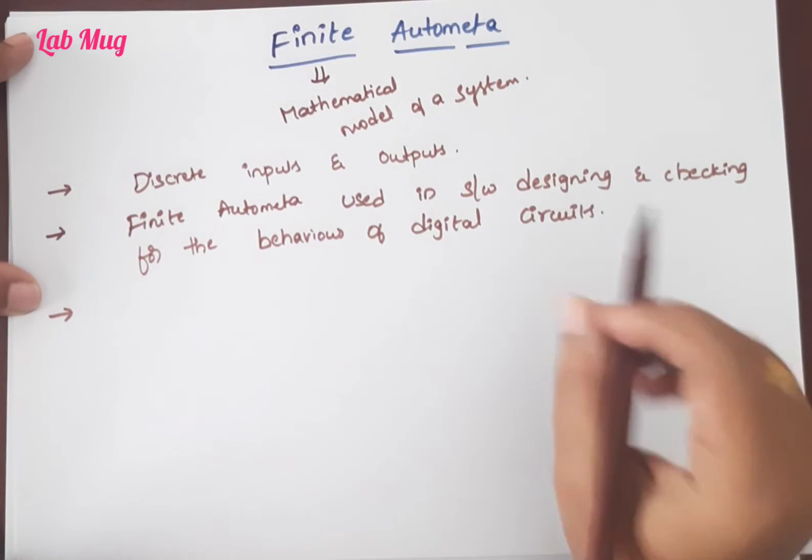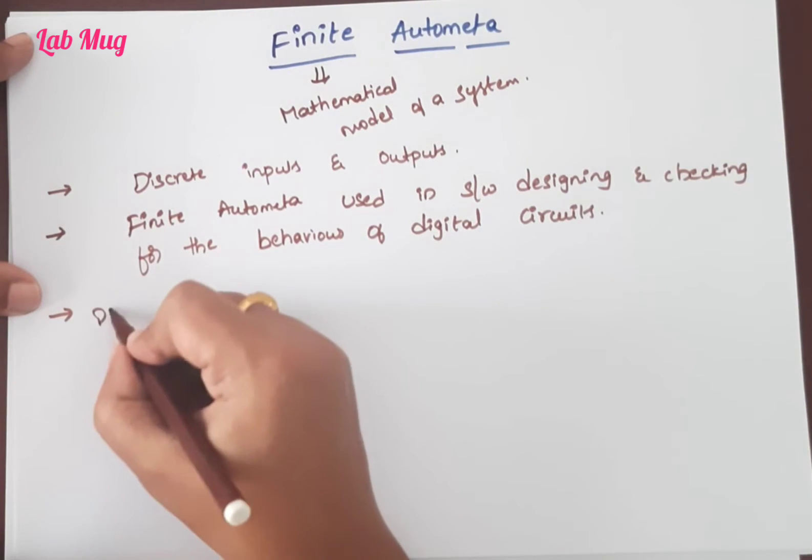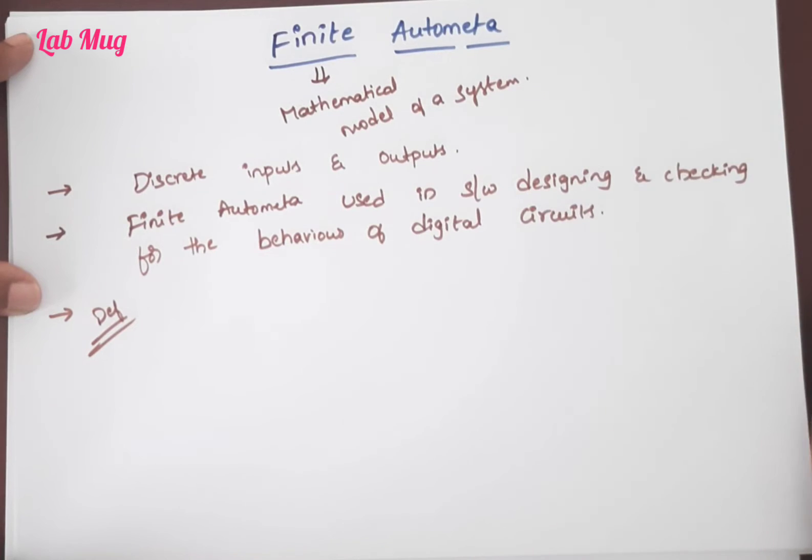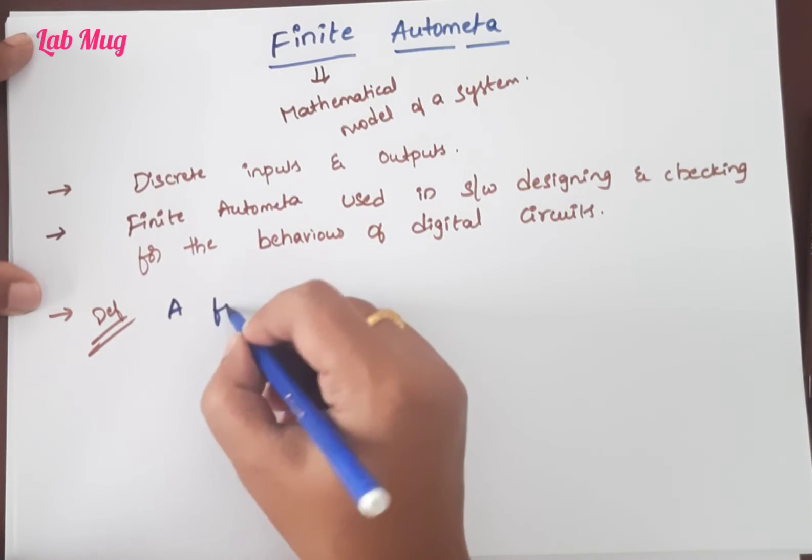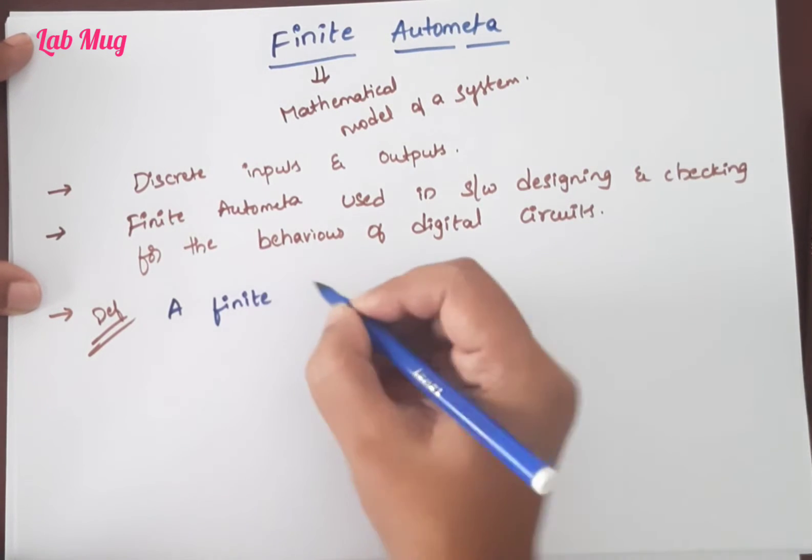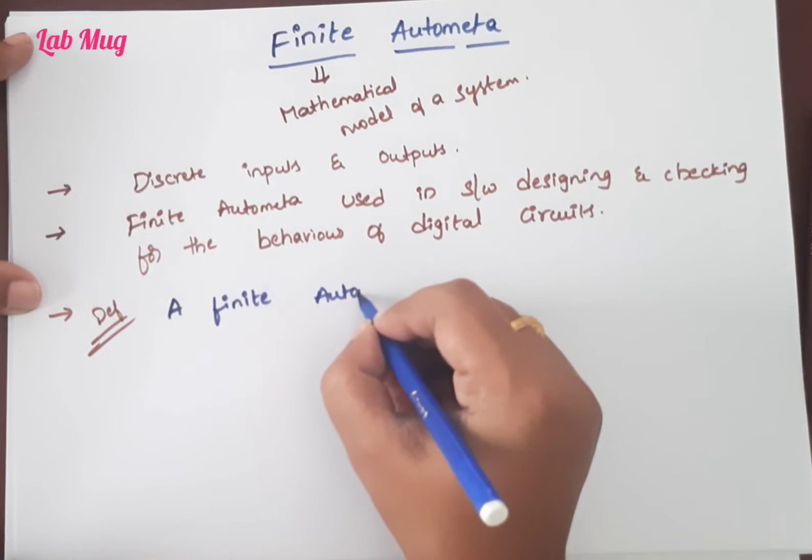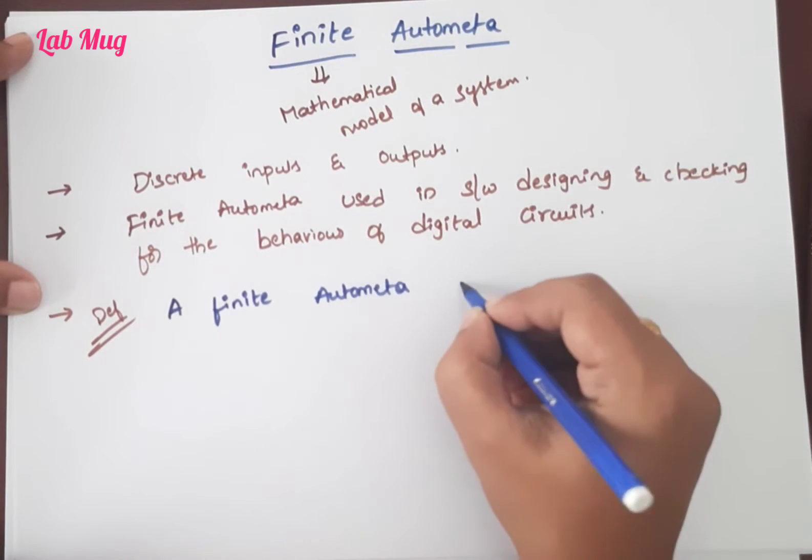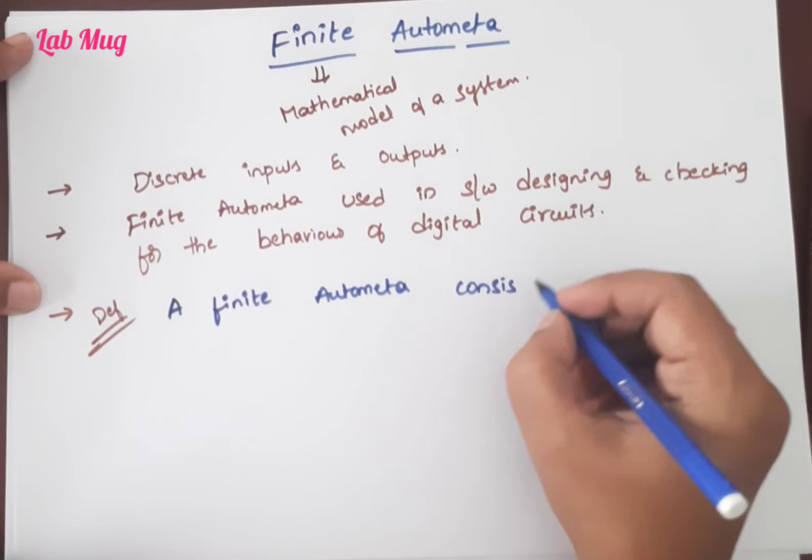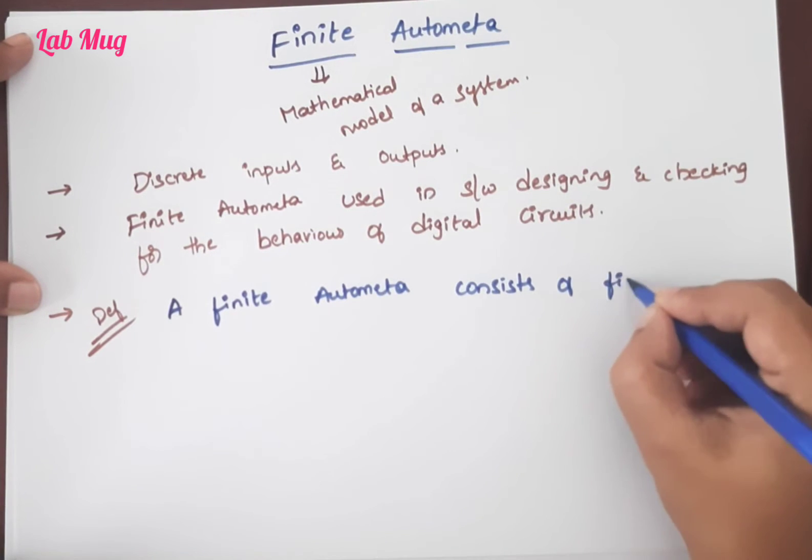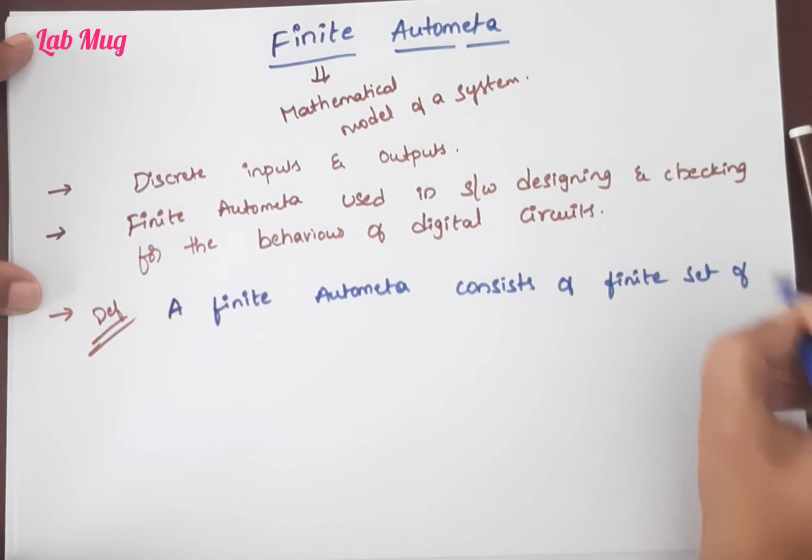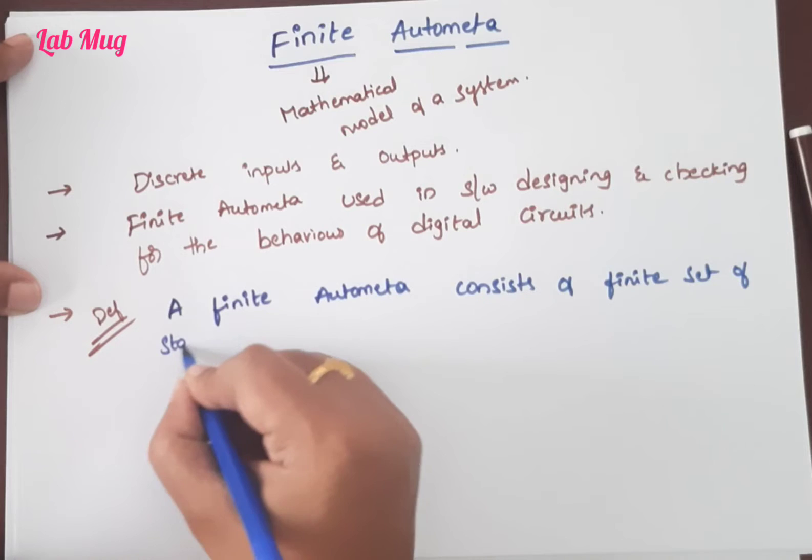First of all, what is finite automata? The definition of finite automata is: it consists of a finite set of states. The main definition is that each and every finite automata related program will consist of a finite set of states.